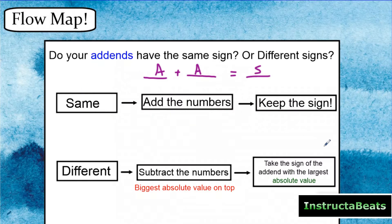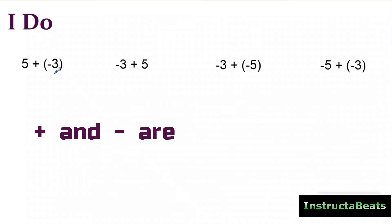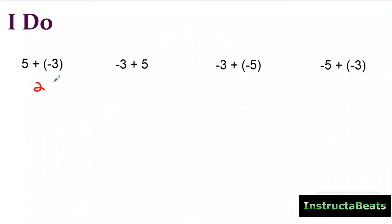Let's look at our 'I do' problems. We have two problems that are the same — I just flipped them: 5 + (–3) and (–3) + 5. First question: are the signs the same or different? Five is positive and negative three is negative, so they have different signs. I go to my different-sign flow map: subtract the two numbers, putting the number with the bigger absolute value first. Five minus three equals two. The sign of the number with the biggest absolute value — five — is positive, so my answer is positive two.